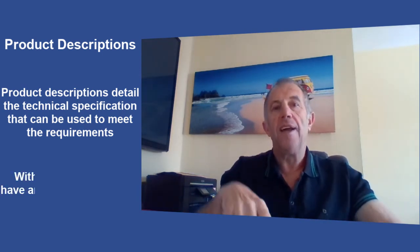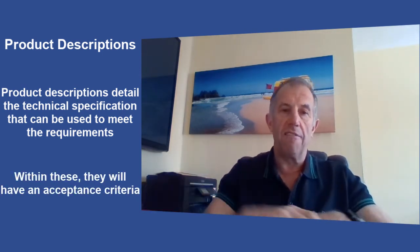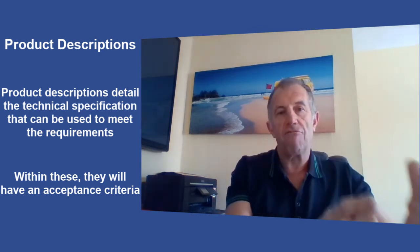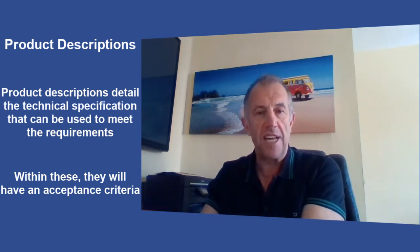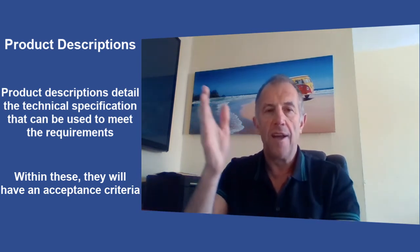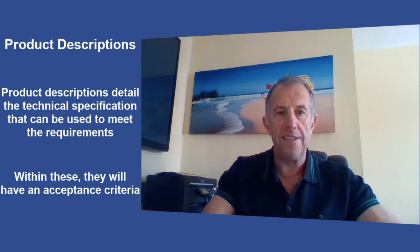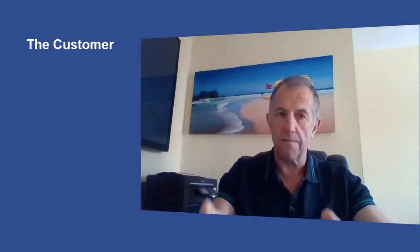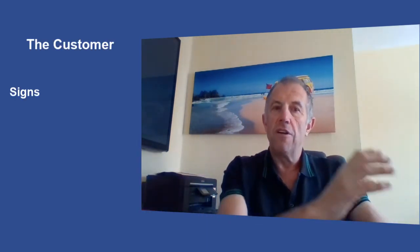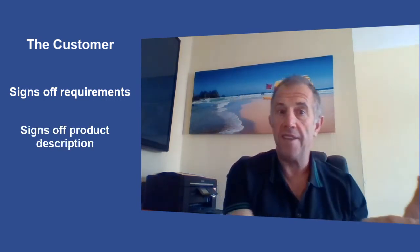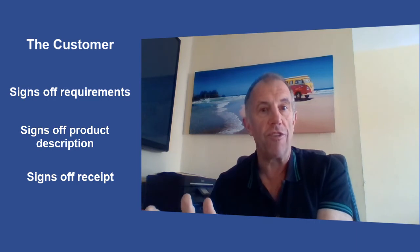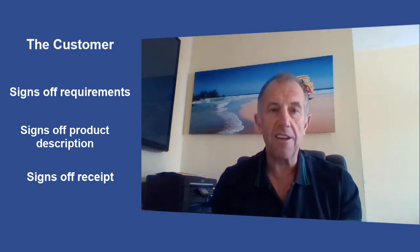As part of putting that product description together, it also includes acceptance criteria, written at the start during the initiation phase, so that when the product is delivered by the supplier there is a way of independently verifying that we got what we asked for. The customer will have signed off their requirements, signed off that the product description meets those requirements, and then at the end they sign off that they've received them.